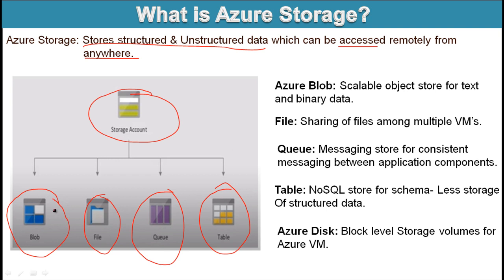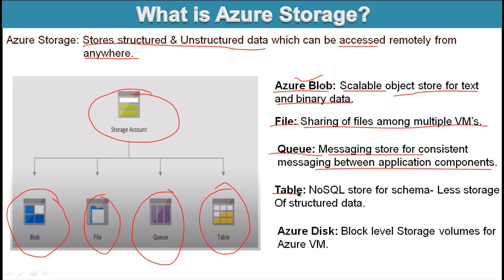We can store data as per their definition. Azure Blob is basically a scalable object store for text and binary data — so inside Azure Blob we store text and binary data. Inside the File type, we can share files among multiple VMs. The Queue type is used to store messaging data for communication between application components. Table is basically a NoSQL store for schema-less storage of structured data.